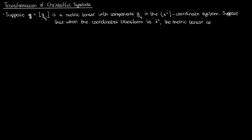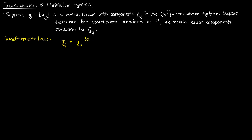In this new coordinate system, suppose my metric tensor components transform to g sub i bar j bar. Now since the metric tensor is a covariant tensor of rank 2, it has two sub-indices. This is the transformation law for the metric tensor as we move from the x super i to the x super i bar coordinate system, and I'm going to call this equation 1. Notice how the two partial derivatives have the barred coordinate at the bottom and the unbarred coordinate at the top — because this is a covariant tensor transformation law, the barred coordinates for each covariant rank will be at the bottom of the partial derivative.